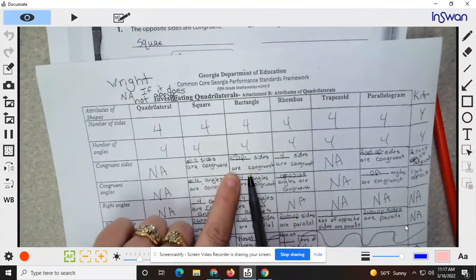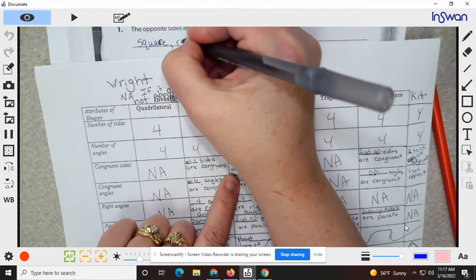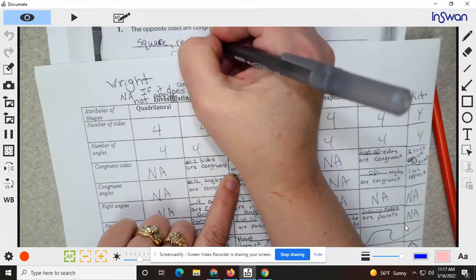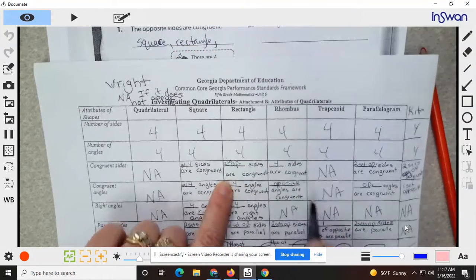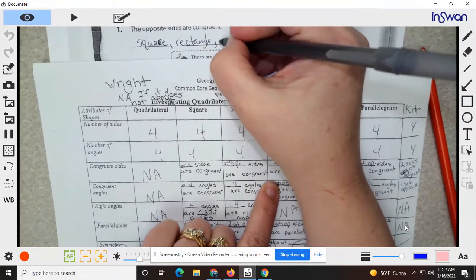Right here opposite sides, rectangle. Four congruent, that means opposites are, rhombus.